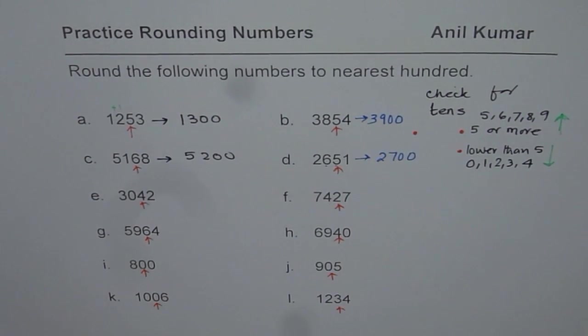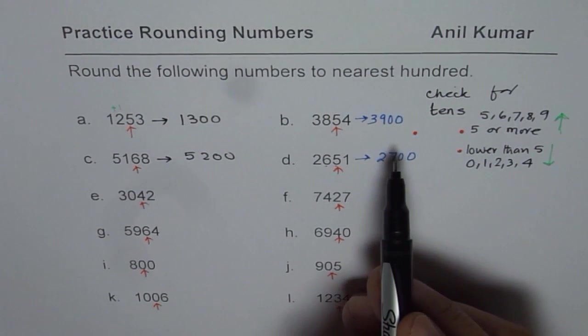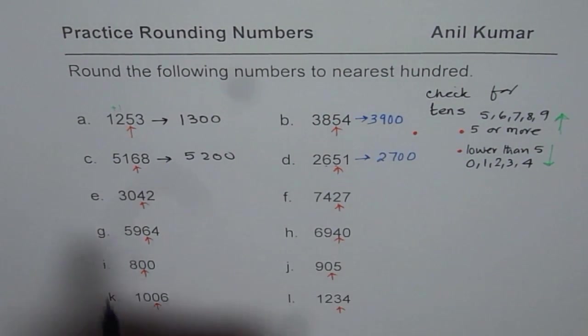So whenever you round to hundreds, you'll get numbers ending with 100, 200, 300, 400 and so on.